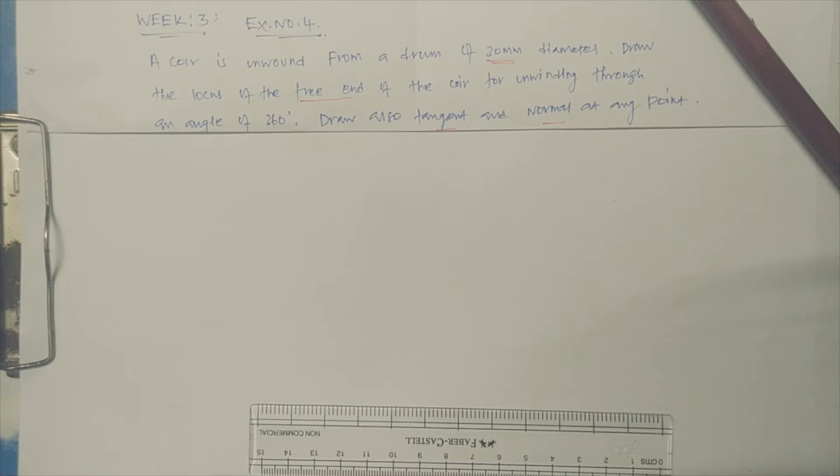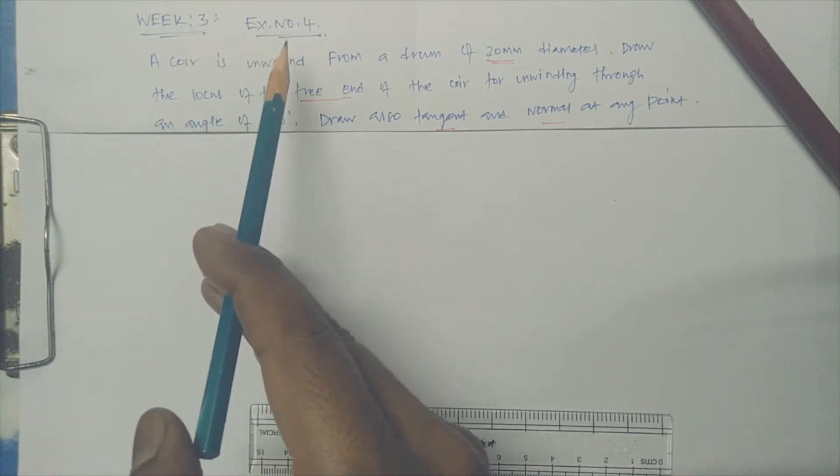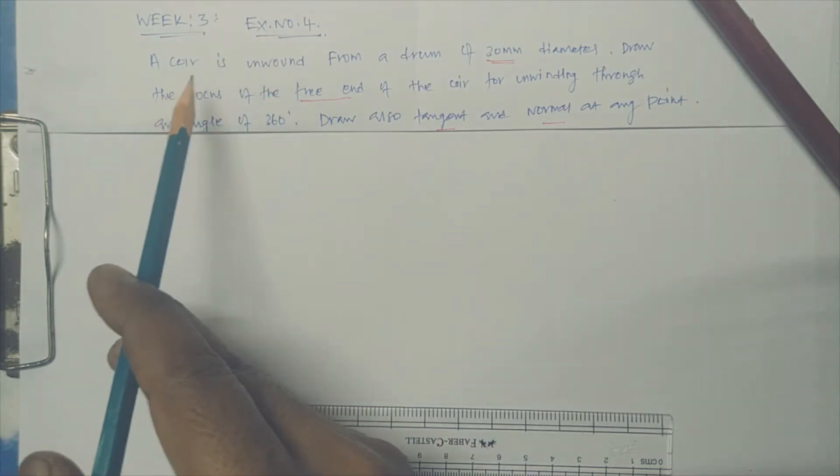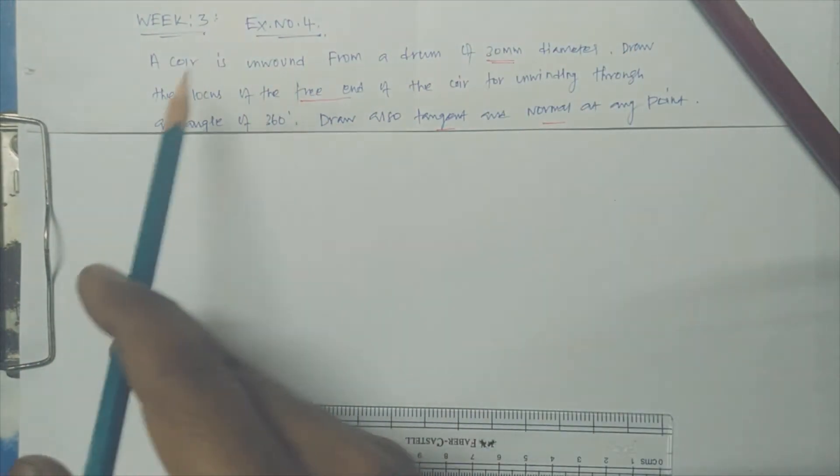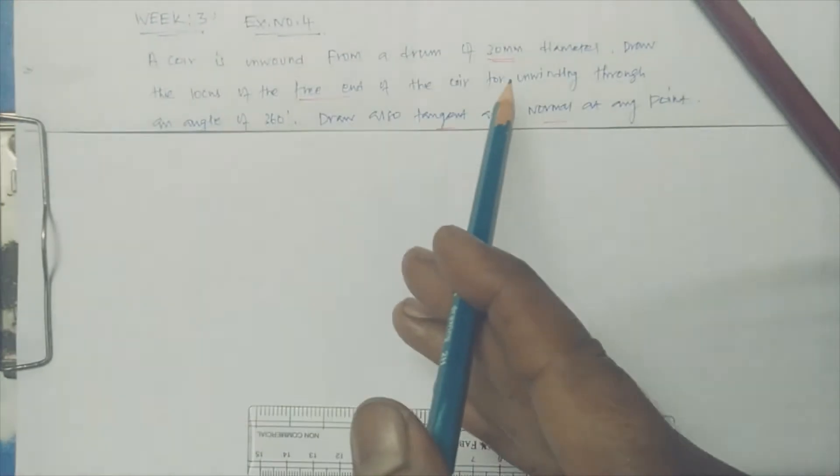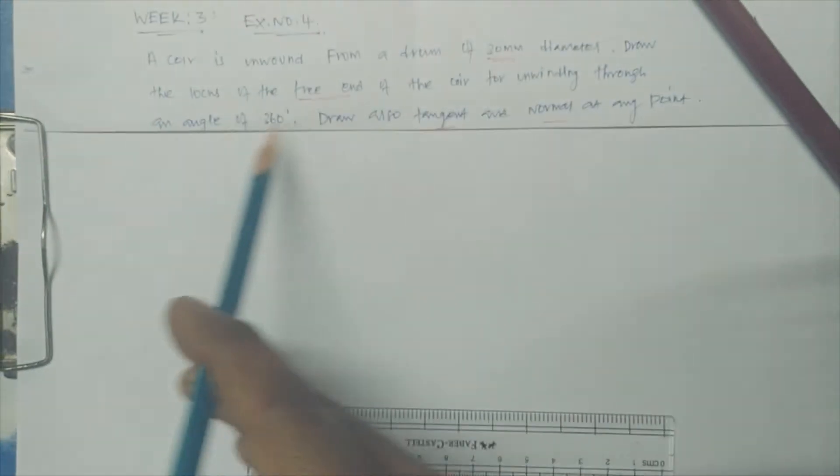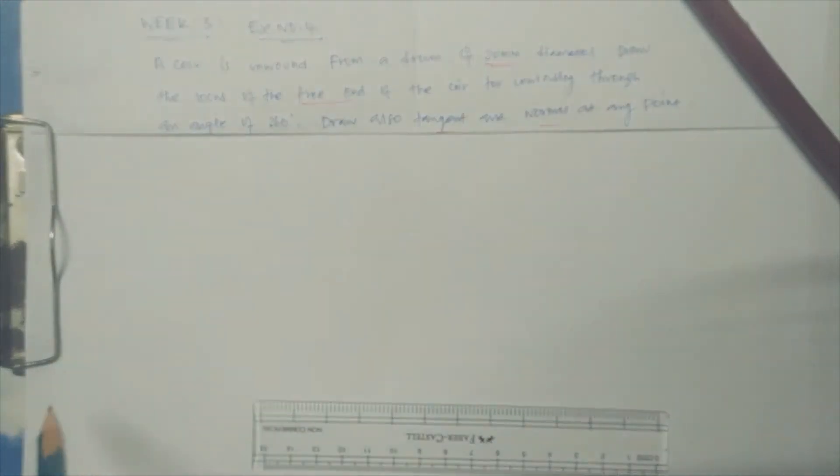Hello students, in this class I would like to explain the problem from Week 3, Example Number 4. A coir is unwound from a drum of 30 mm diameter. Draw the locus of the free end of the coir for unwinding through at an angle 30 degrees. Draw also tangent and normal at any point.